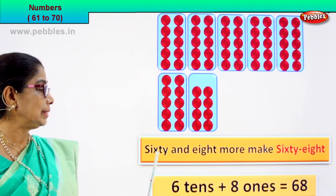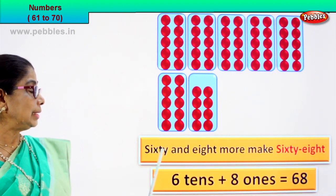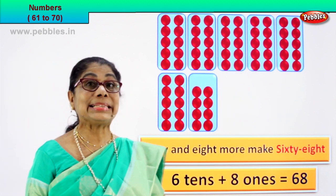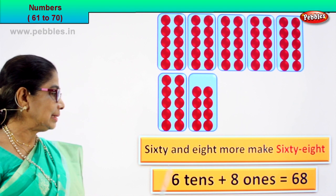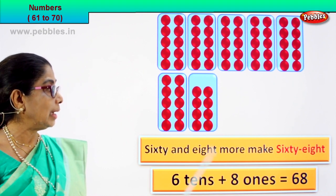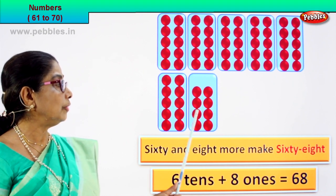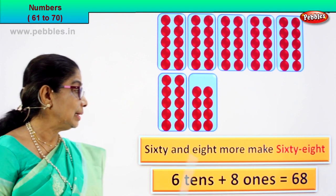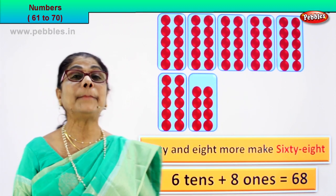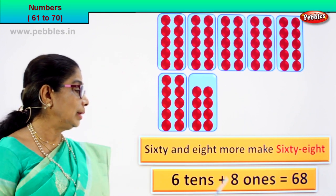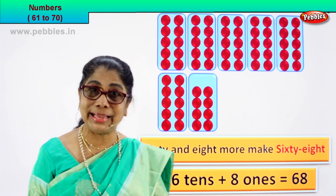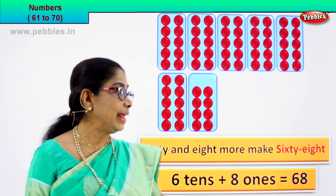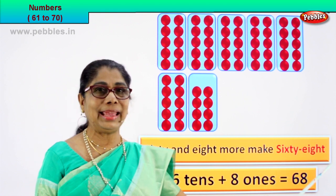What is sixty? Six tens. Six tens is sixty. Plus one, two, three, four, five, six, seven, eight — eight ones. Six tens plus eight ones equal to sixty-eight. What is sixty-eight? That is a number. How do we write its name? Sixty-eight.